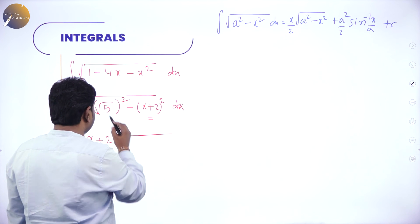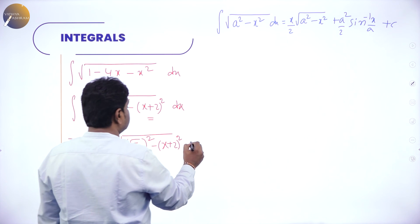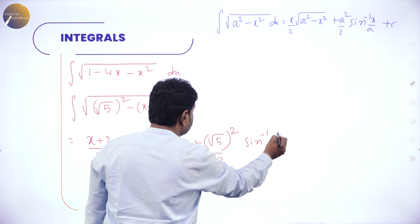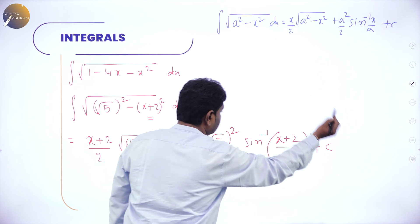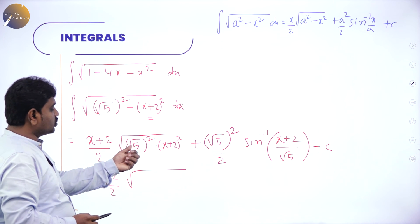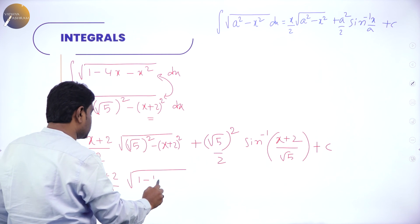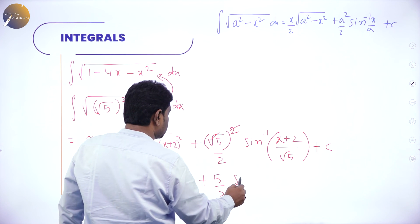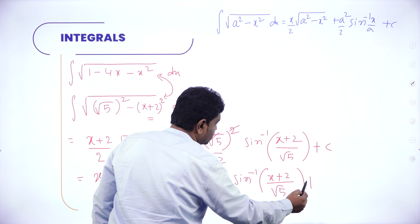Applying the formula: (x+2)/2 · √((√5)² - (x+2)²) + (√5)²/2 · sin⁻¹((x+2)/√5) + C. Substituting back, (√5)² - (x+2)² = 1 - 4x - x², so the final answer is (x+2)/2 · √(1 - 4x - x²) + 5/2 · sin⁻¹((x+2)/√5) + C.